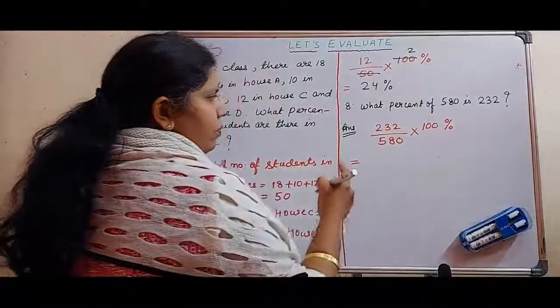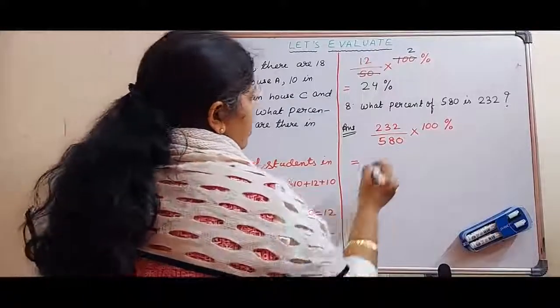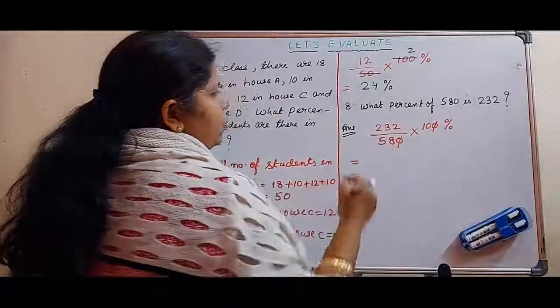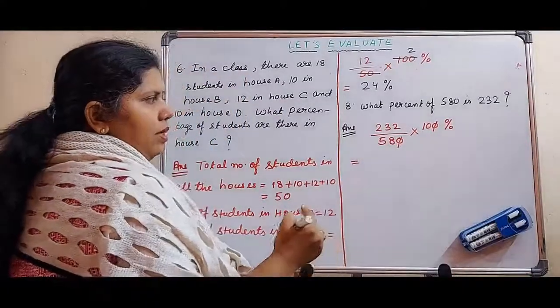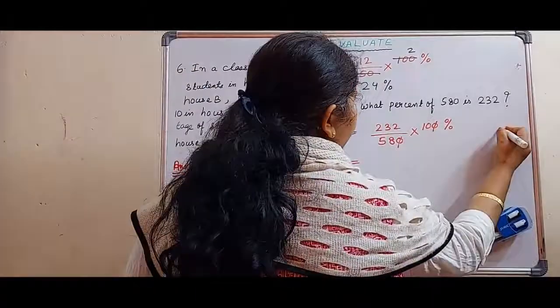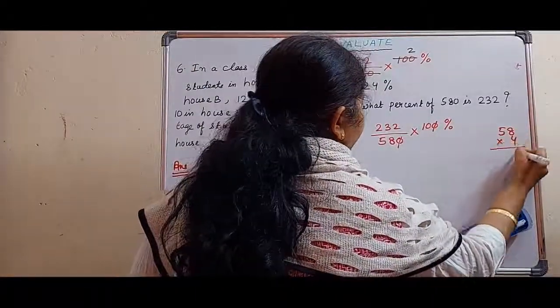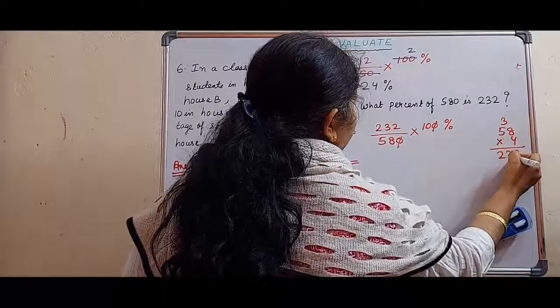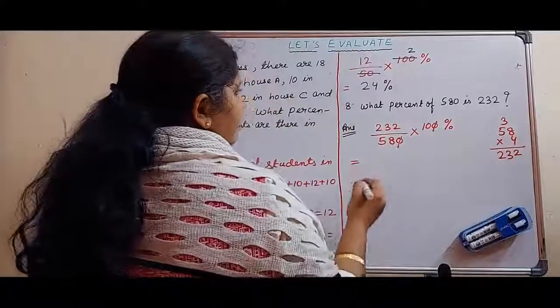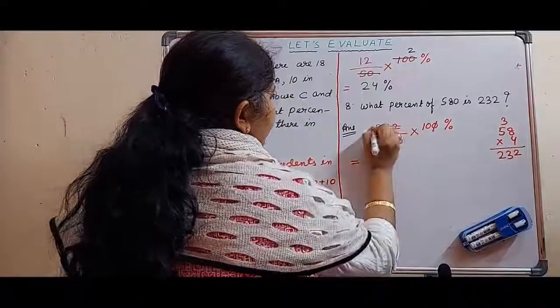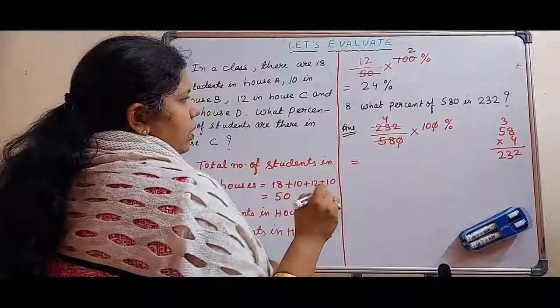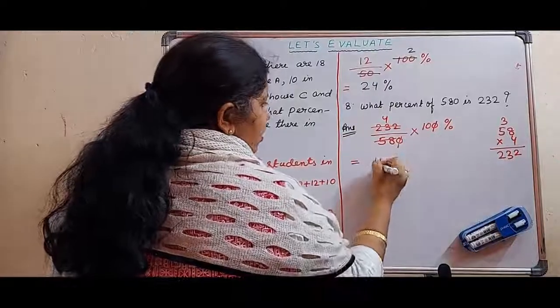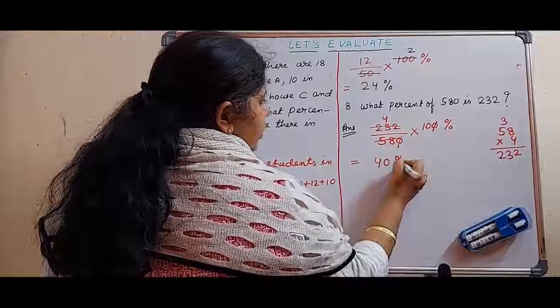Now when we solve it, what we will get? This zero and this zero will get cut. And what is remaining? 58. Let's check: 58 into 4 - 8 fours are 32, 5 fours are 20 plus 3 is 23. So 232. Yes, it is solving. 58 times 1 is 58, and 58 times 4 is 232. Now, 4 here and 10 here. So 4 into 10, how much we will get? 40. So 40 percent is your answer.